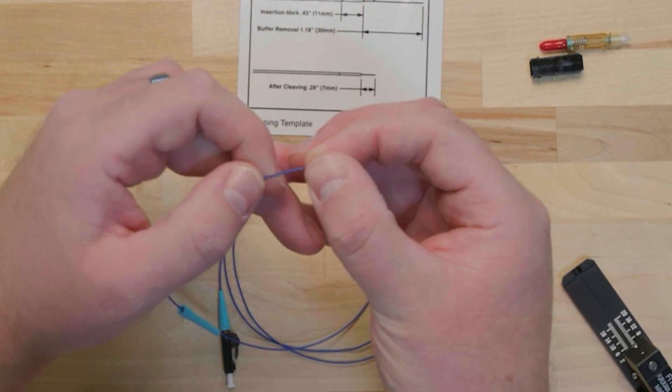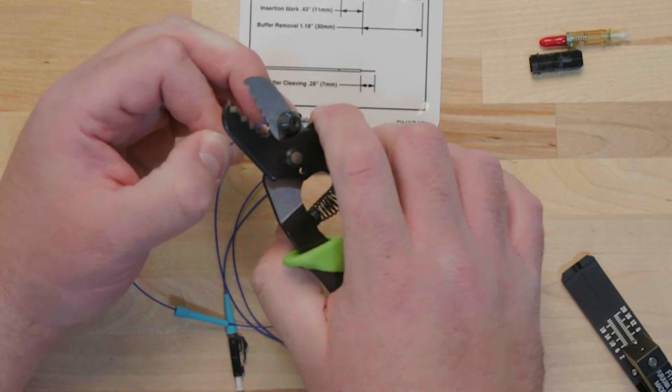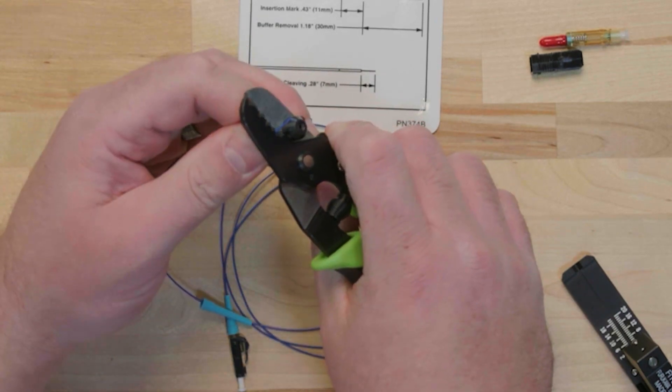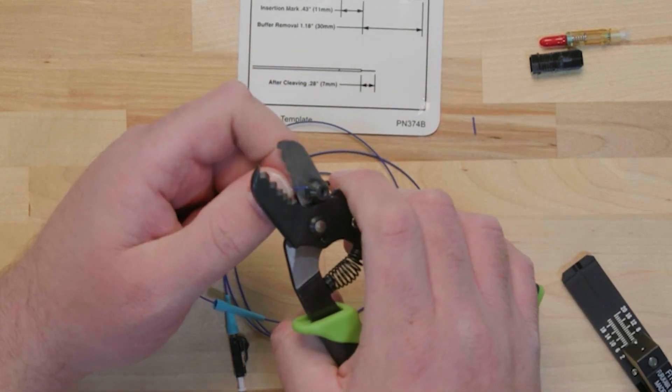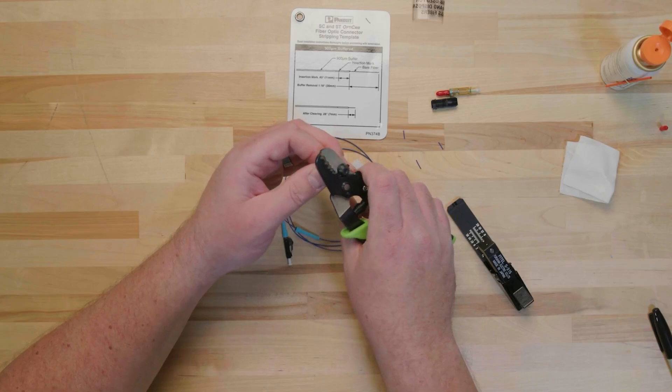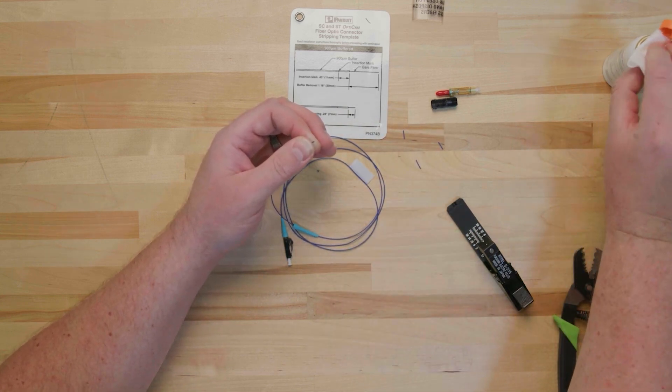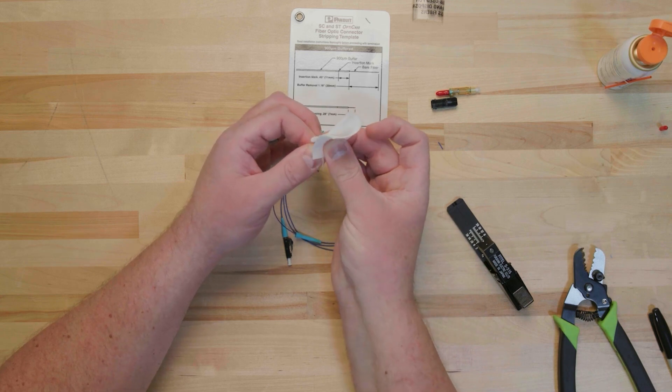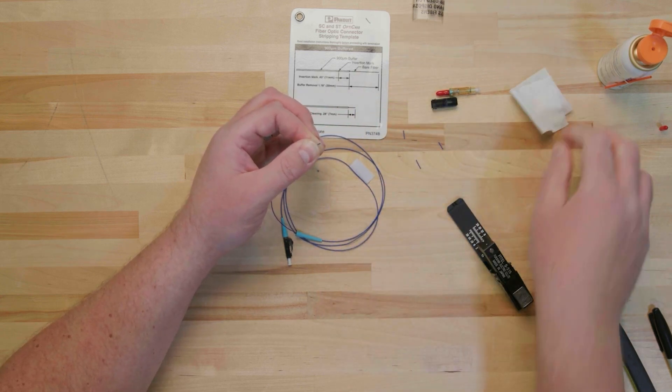Use your strippers to remove the buffer. Place your strippers at 5 to 10 millimeters from the end of the buffer. Use short increments to strip the buffer and acrylite down to the bare fiber 5 to 10 millimeters at a time, all the way to the stripping mark. Once the buffer is stripped, use an approved wipe and cleaning solution to clean any dust, residue, or debris from the bare fiber. Pre-saturated wipes are not recommended.